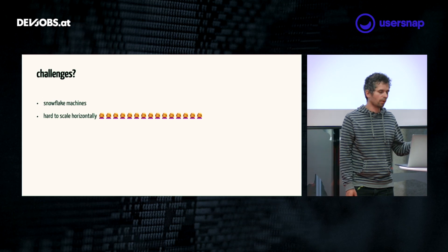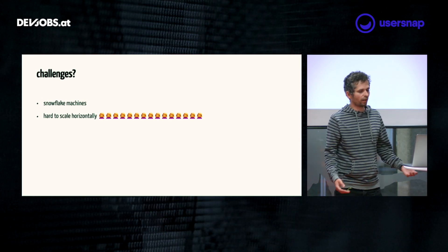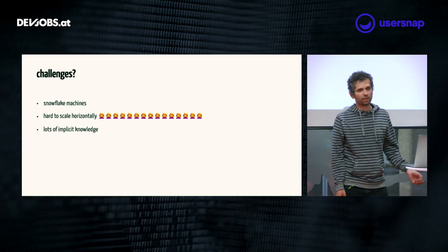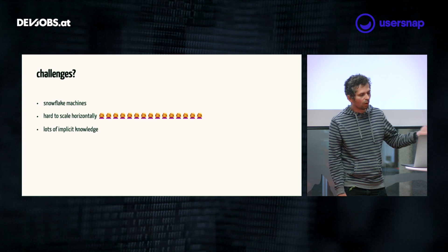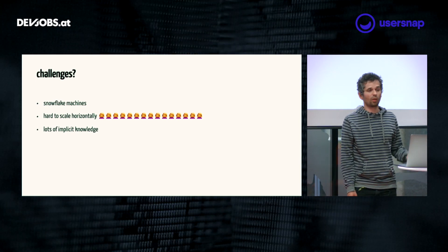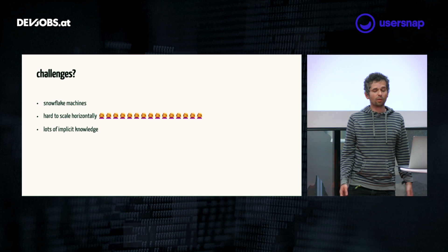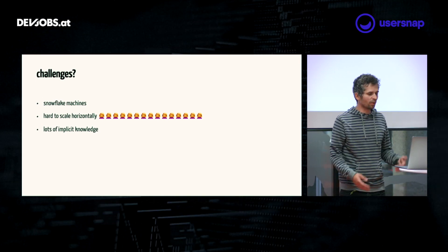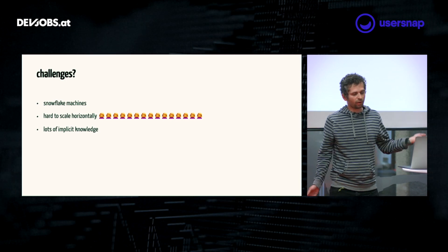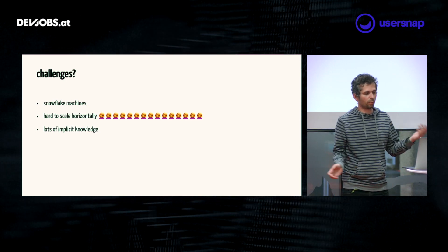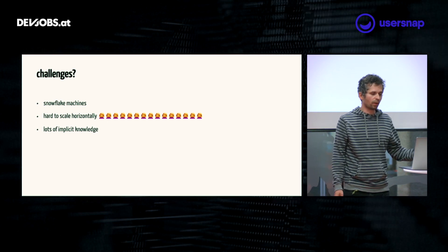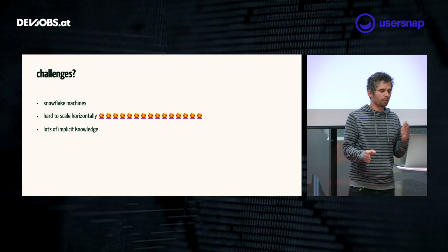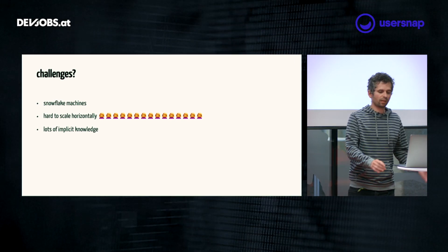You have a server doing something, then you add one thing, then another thing, and you do this five or ten times, and two years later nobody really knows what is running on the machine anymore. That makes it very hard to scale horizontally. Another challenge is that you have lots of implicit knowledge — you need to know that you're using Apache as your web server and not NGINX, because otherwise you don't know where to look for the config. Those are all solved problems — you can write a shell script to set up your server or use Ansible.